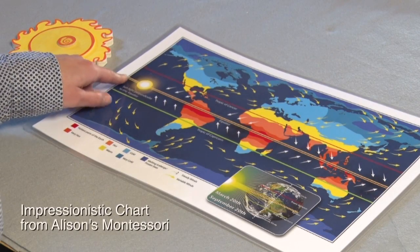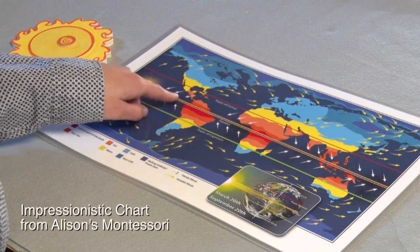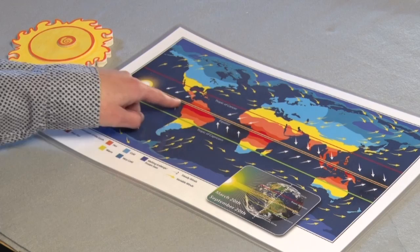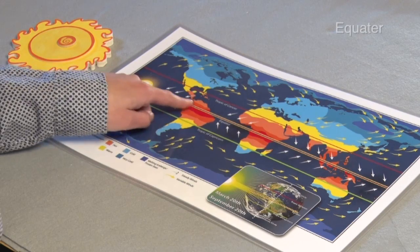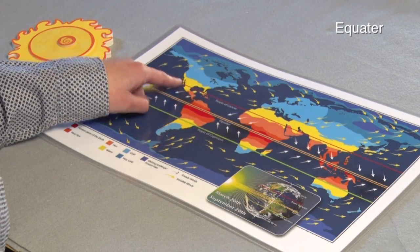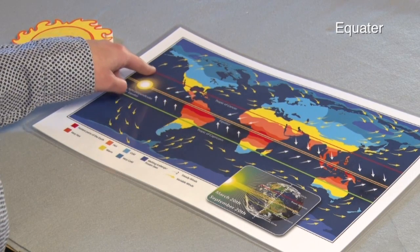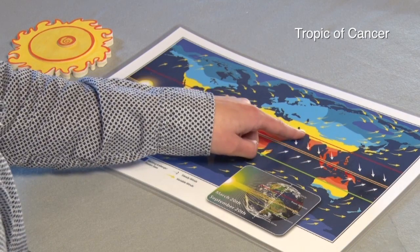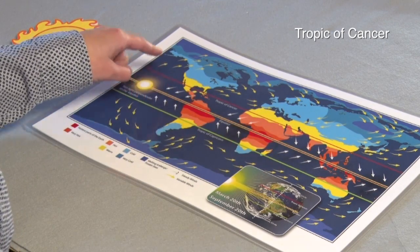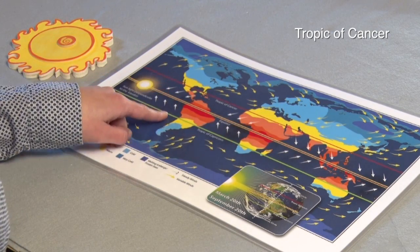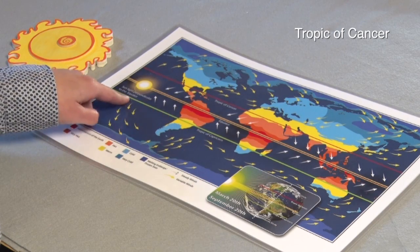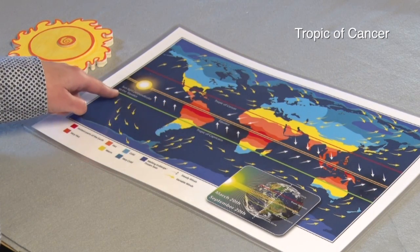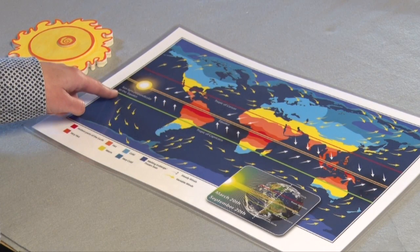This is a picture of our Earth flattened out. If we look right across the center, we have the equator. To the north of the equator, we also have a line, and this is our Tropic of Cancer. South of the equator, we have a line, and this is the Tropic of Capricorn.